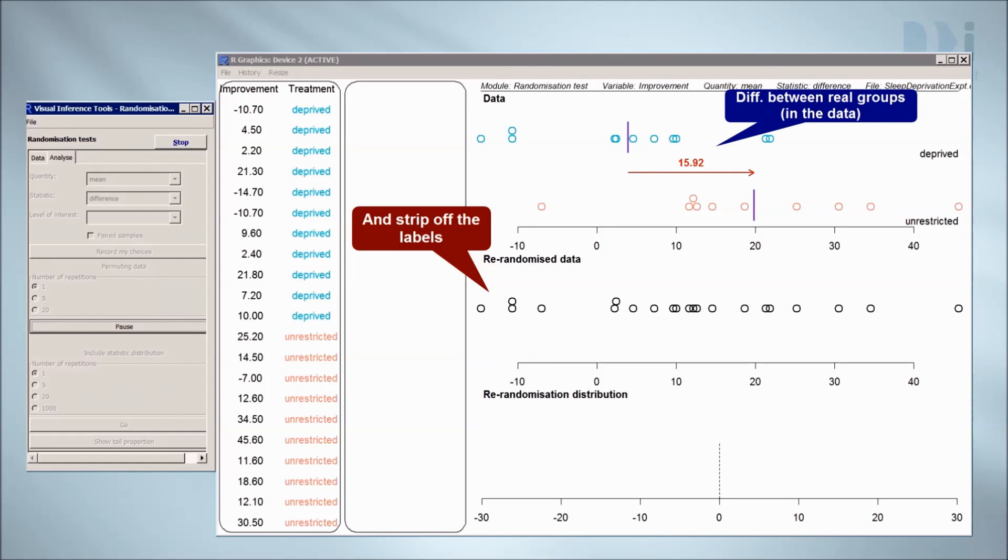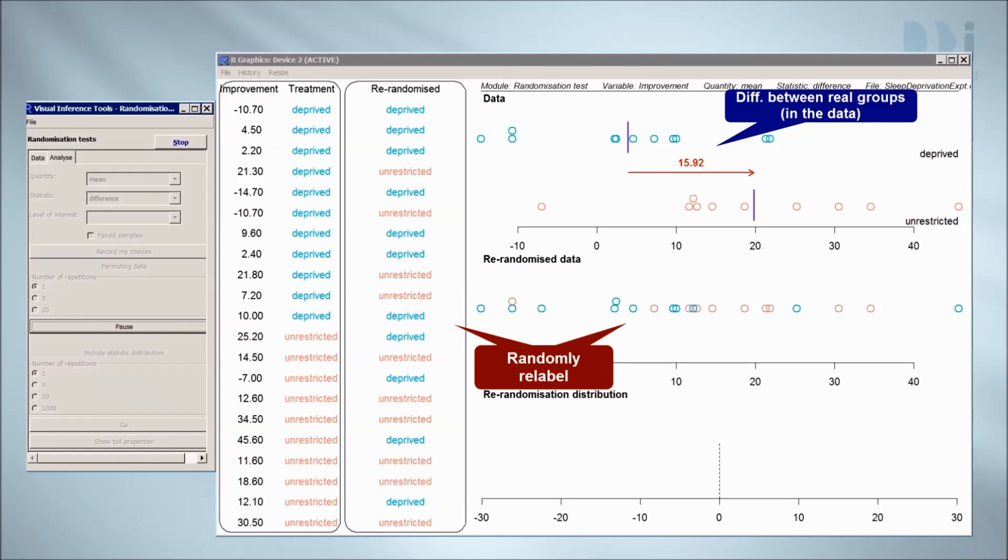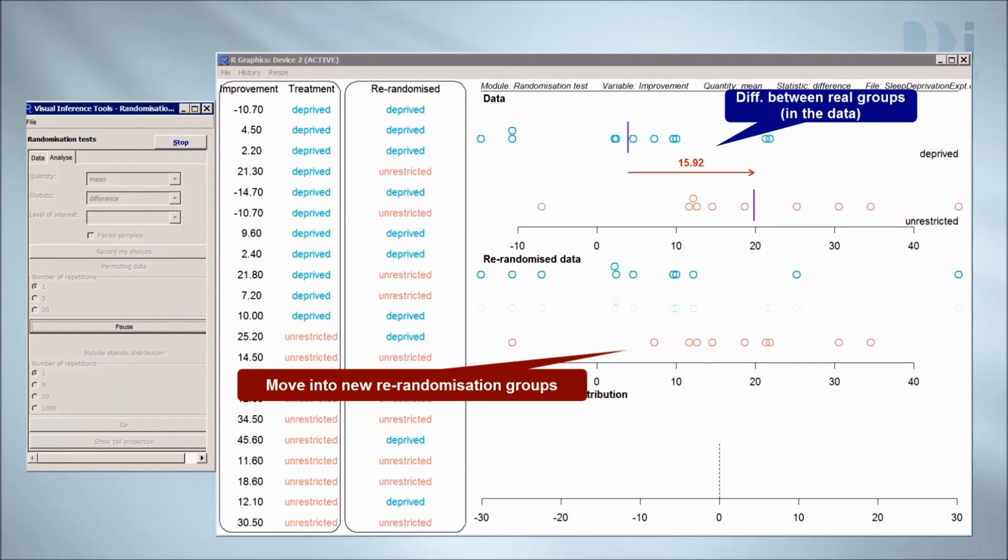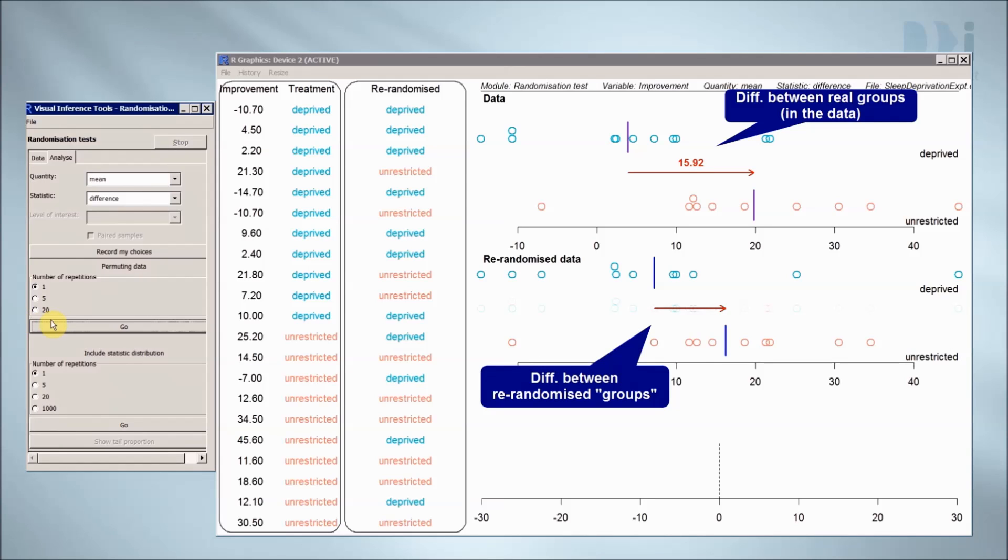How big are the differences we'd get from pure random reassignment, just by the luck of the draw? We'll randomly form new groups. There were 11 people in the sleep deprivation group, and 10 in the unrestricted group. So we'll randomly put green deprived labels on 11 of them, and red unrestricted labels on the rest. Now we'll pull them apart into their artificial groups and look at the difference between their means.